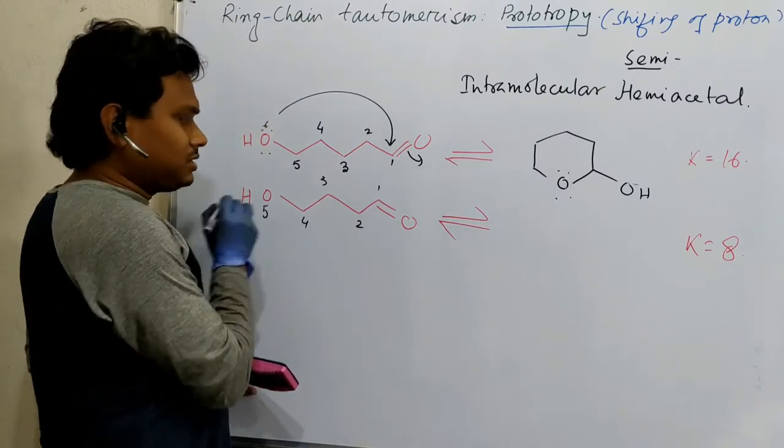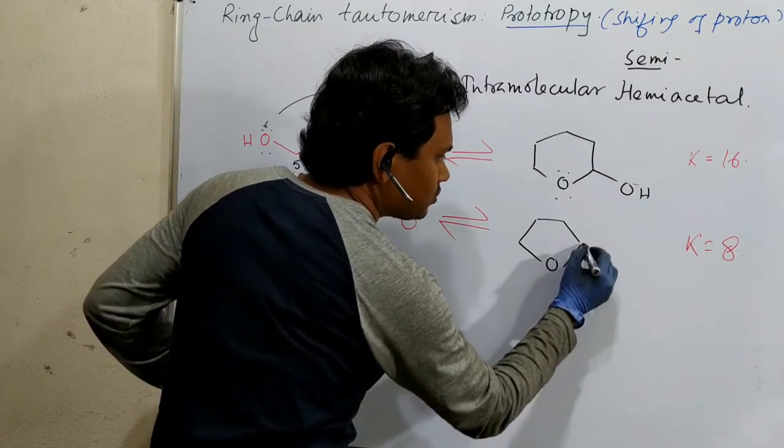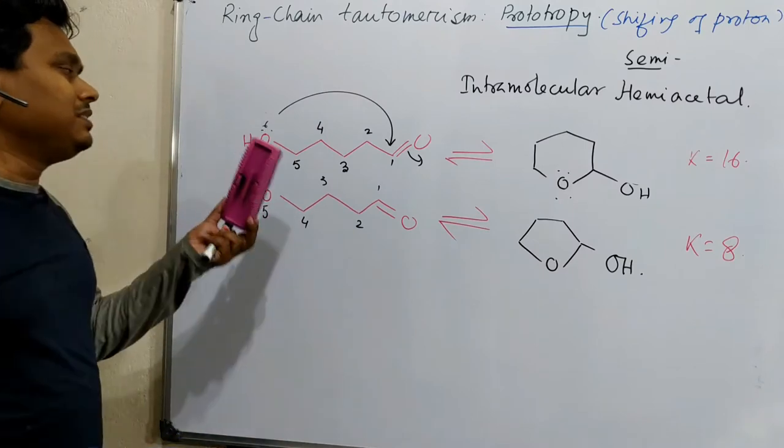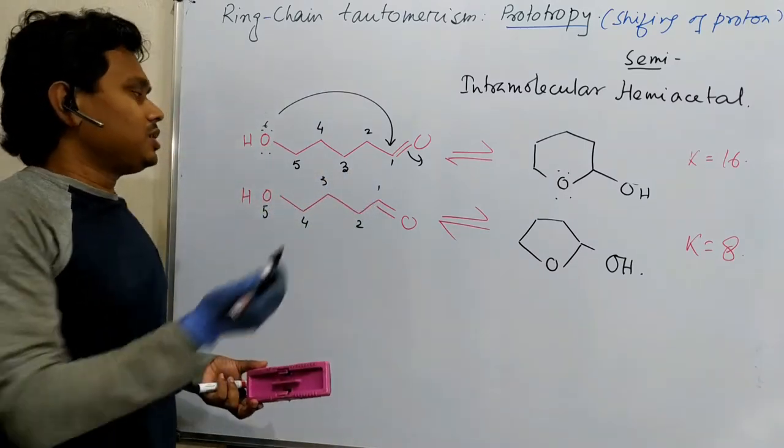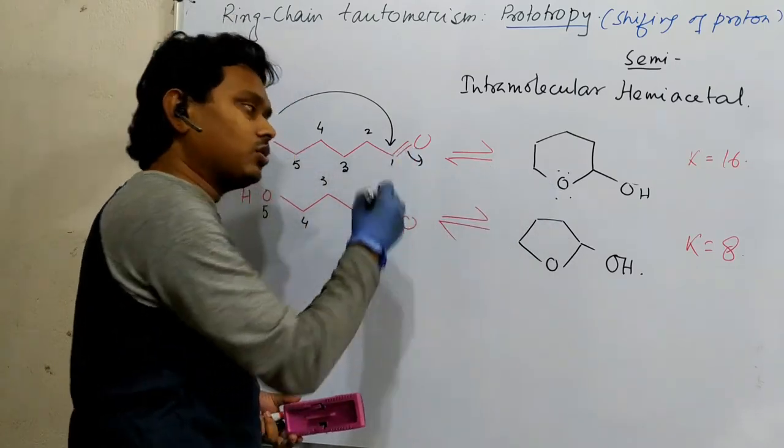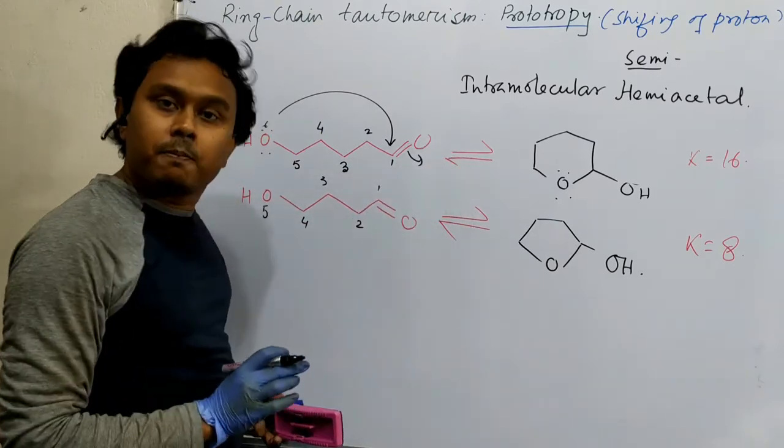So, similar thing here. So, in this case, 5-member ring can form. This. So, it will result in this. So, actually, in this compound, if you keep this compound, if you store this, you will find the property of carbonyl as well, I mean, there is C=O. But along with this, and additionally, this is in equilibrium.